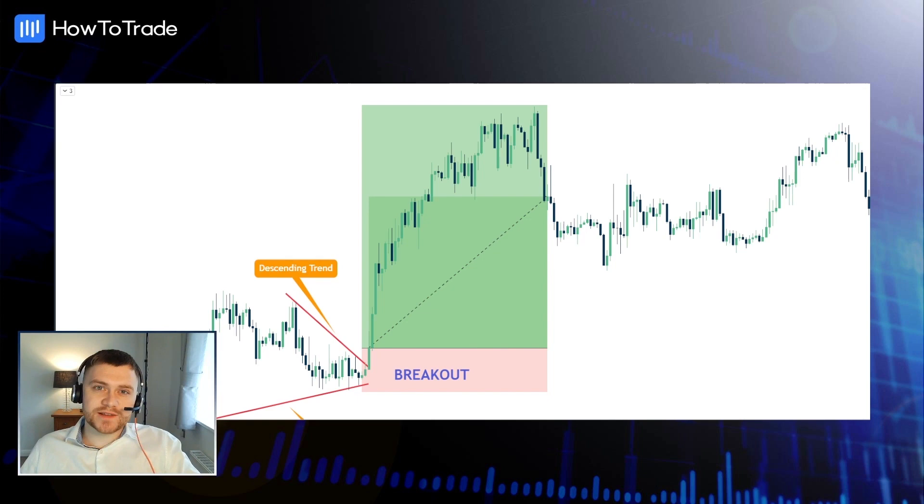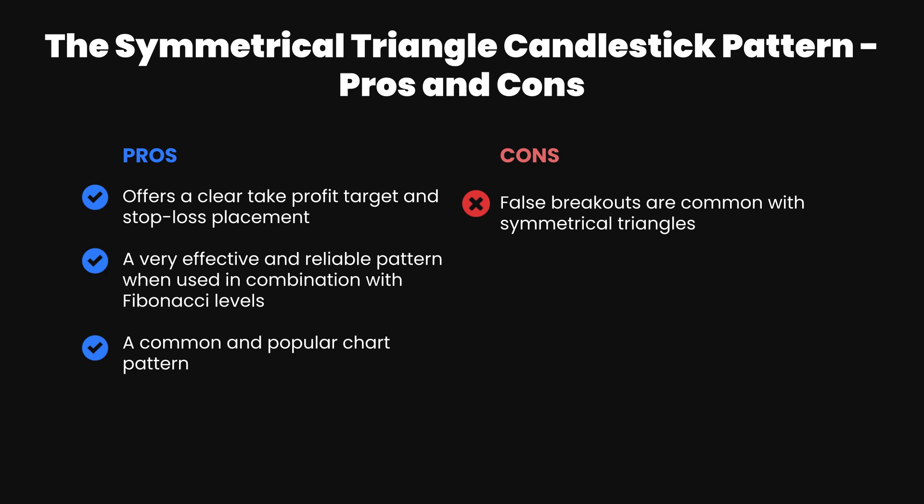Here are the pros and cons for the symmetrical triangle pattern. First, the pros: symmetrical triangles offer clear take profits and stop loss placements, meaning we have definitive market entry and exit points. It is also a very effective and reliable pattern when used in combination with technical indicators such as Fibonacci levels. Lastly, symmetrical triangles are common and popular chart patterns, so you can find them easily in any market on any time frame.